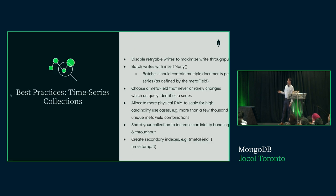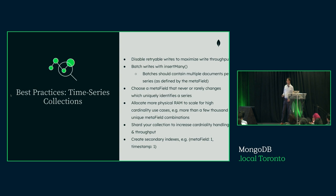Some best practices: if you have retryable writes, disable that to improve throughput. When doing batch writes, group your writes by the metadata or sensor ID. Choose metadata that never changes — updates are allowed, but the less they change, the less disruption to the physical bucket design. Make sure you have enough RAM allocated for the number of open buckets you need to handle all your different sensor IDs. You can increase cardinality and scale sensor count by sharding — horizontal scaling of time series collections is supported. And don't forget to create secondary indexes for optimal performance.